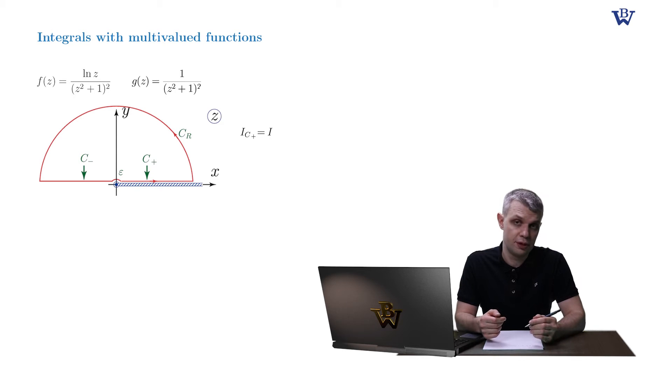We already proved that the circular integrals vanish in our previous slide. The very fact that these are semicircular integrals doesn't change our reasoning. So our closed contour integral is again reduced to the combination of its linear parts c-plus and c-minus.